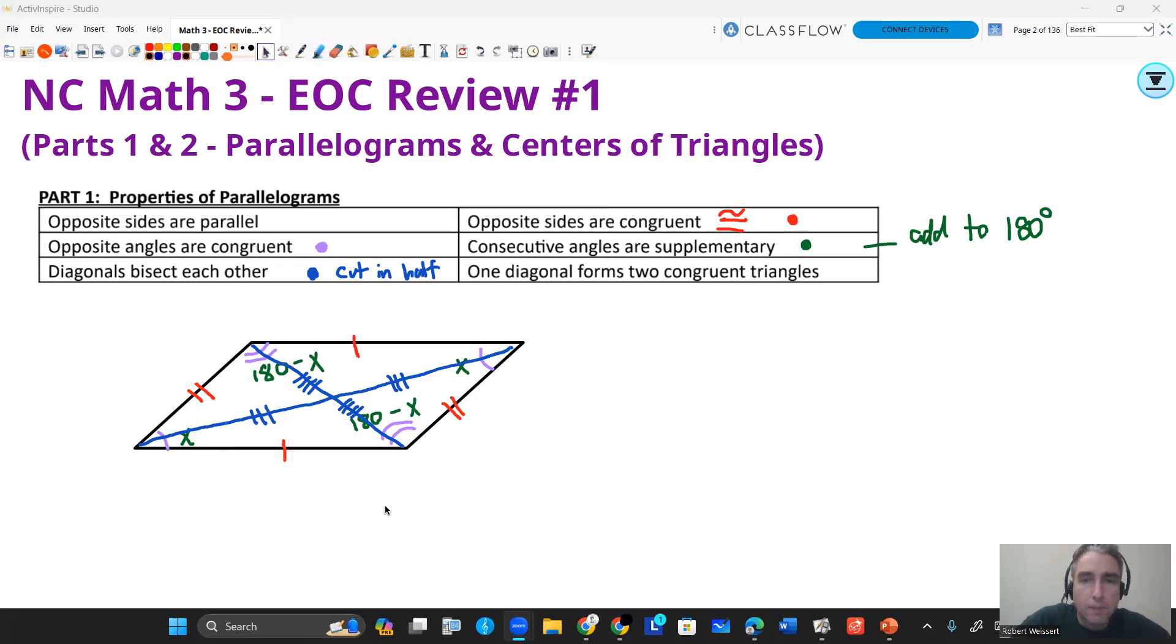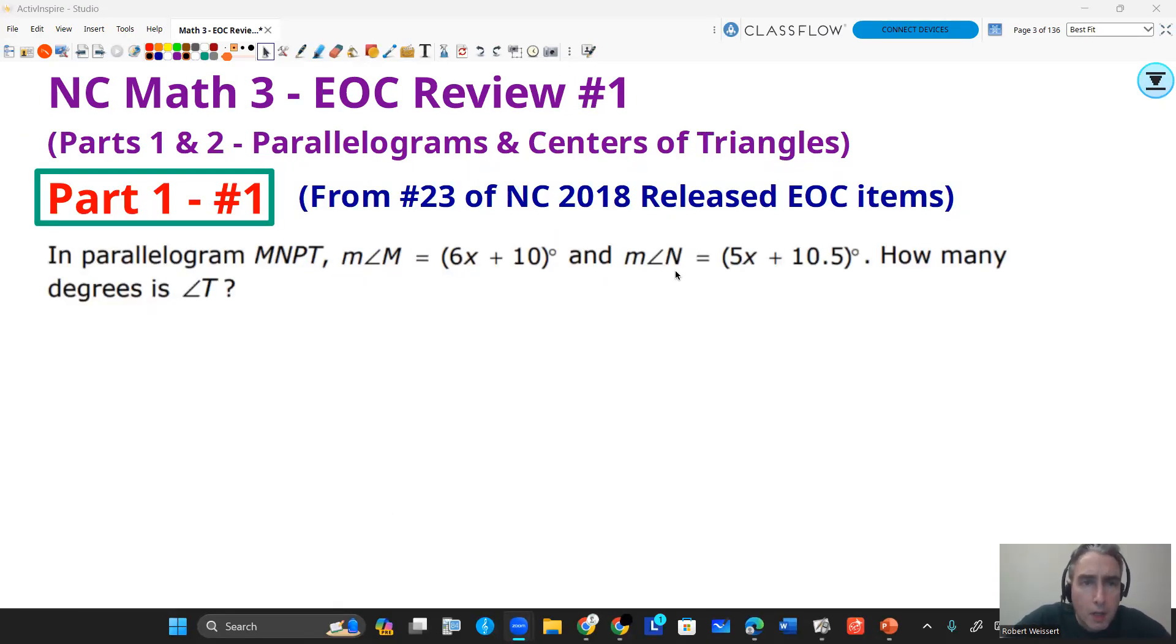Let's consider a couple of problems. All right, part one, question one. This question is actually from the North Carolina 2018 released EOC items, number 23. Here's the question. In parallelogram MNPT, the measure of angle M is 6x plus 10 degrees, and the measure of angle N is 5x plus 10.5 degrees. How many degrees is angle T? So this question wants to know a degree measure. The first thing you should do in this problem is draw a parallelogram. Next, you want to label it. When you label it, you want to go in the order that the letters you see in the name of the parallelogram. So you don't want to skip, go consecutive, MNPT, like you're going around in a circle.